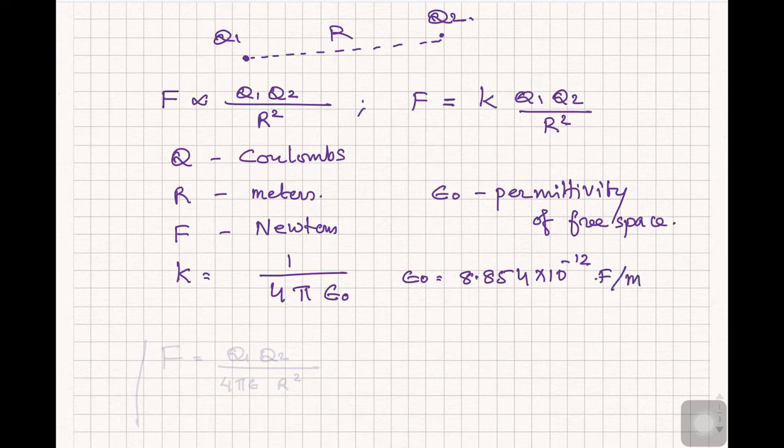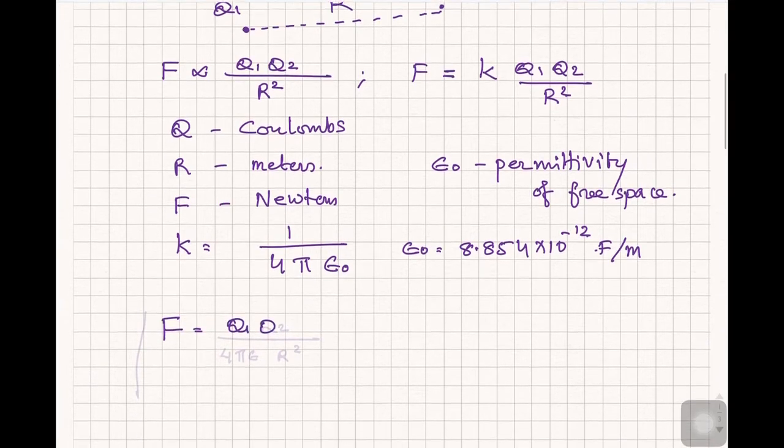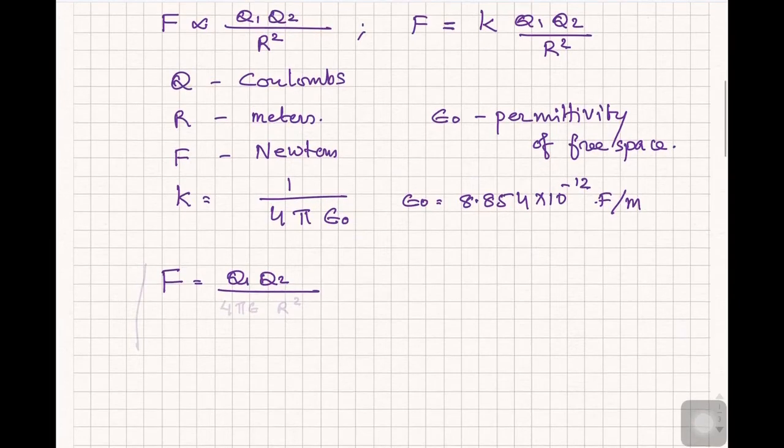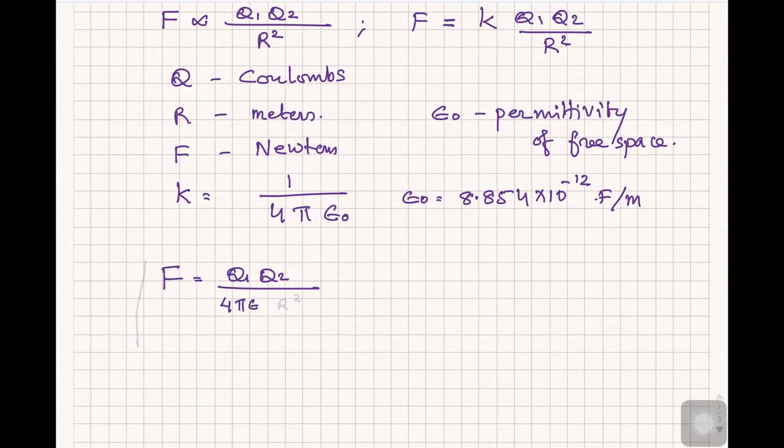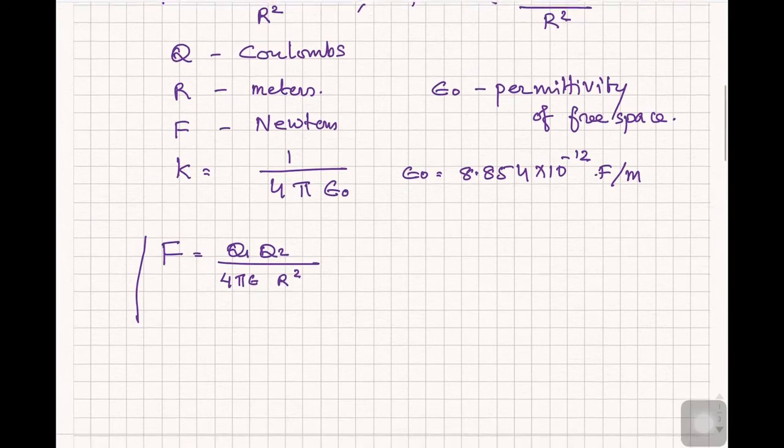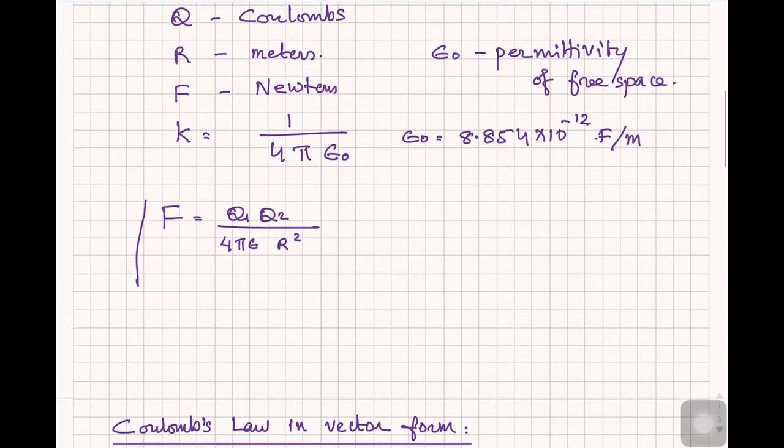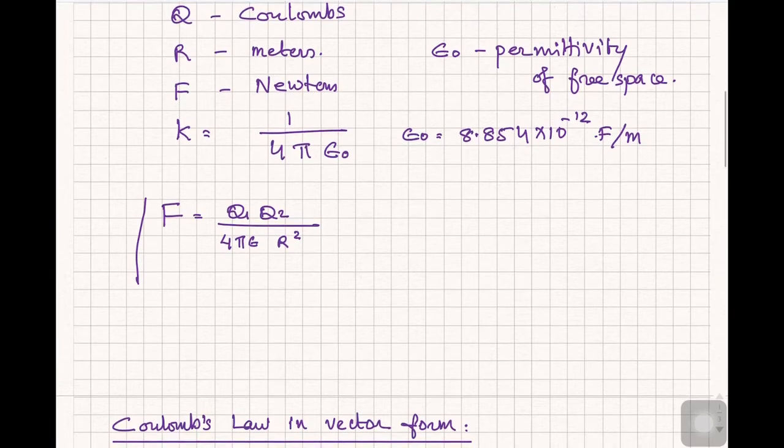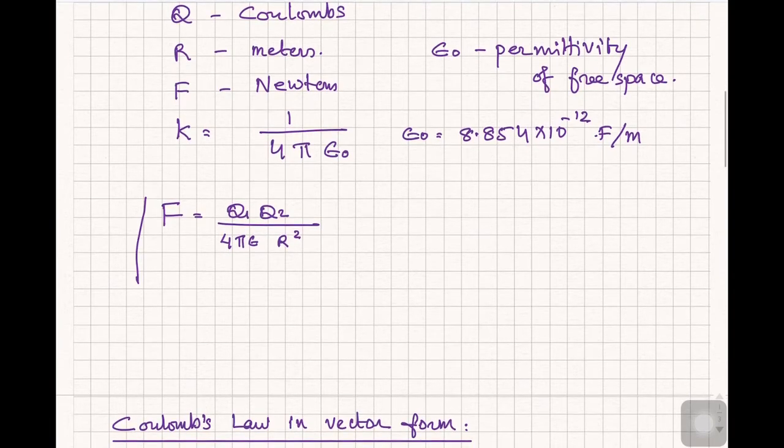Now we can write the final equation of the force, that is F is equal to Q₁Q₂ divided by 4π epsilon R square. This is the final equation of the force. This is basically the magnitude part. So force is a vector quantity, we have not seen its direction yet. Now this is just talking about the magnitude of the force.